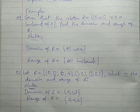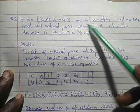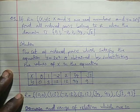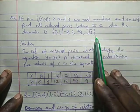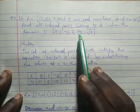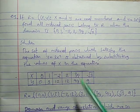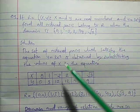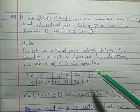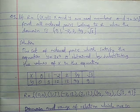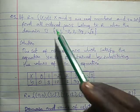But sometimes you are given an equation. For example, if R is equal to ordered pairs (X, Y) where X and Y are real numbers and Y equals 3X squared, find all ordered pairs belonging to R when the domain is {0, 1, -2, 2/3, √3}. To find range, you substitute each X value into the equation to get ordered pairs.